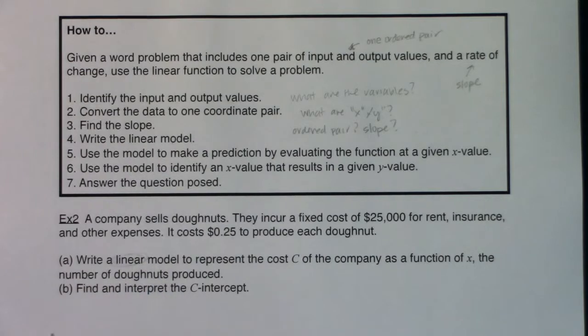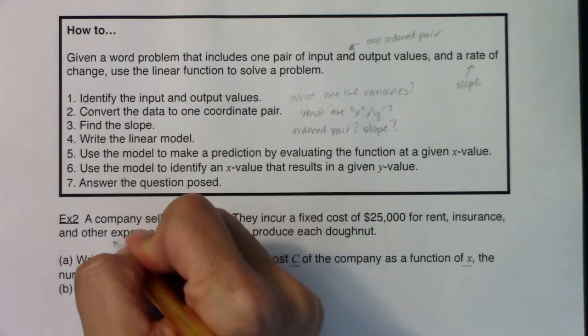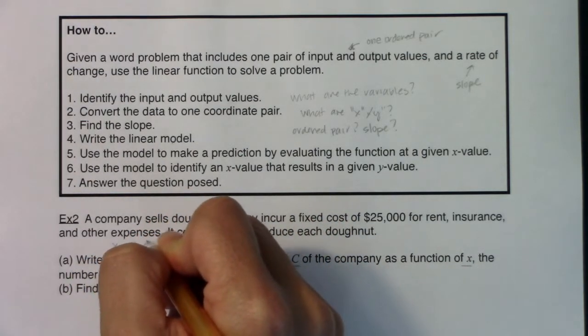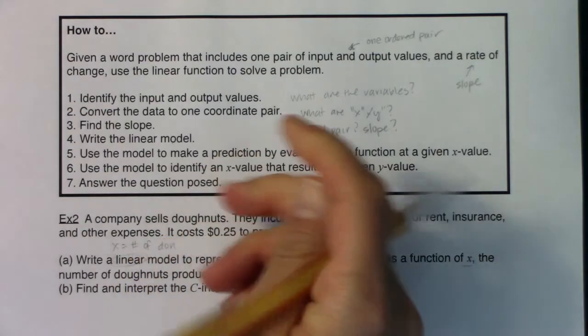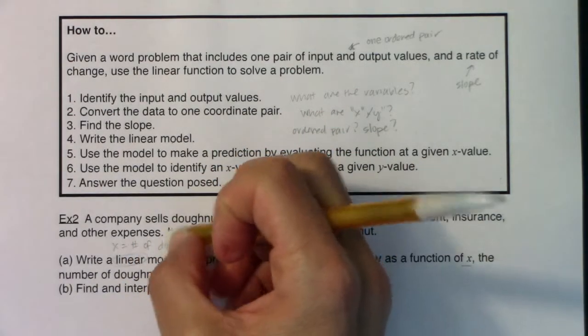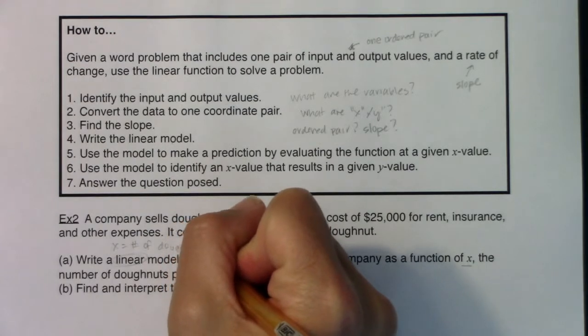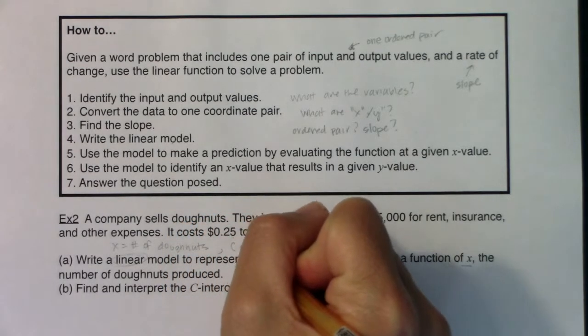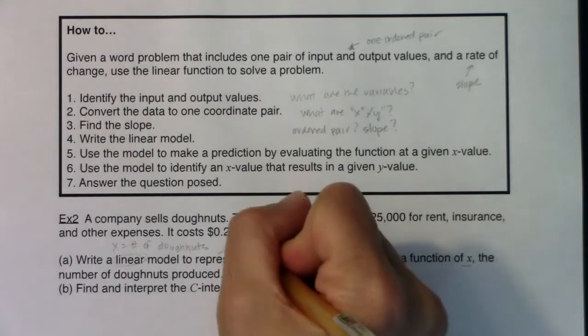Write a linear model. I want a linear model to represent the cost C of the company as a function of x, the number of doughnuts produced. Find and interpret the C-intercept. So I'm not going to use x and y. They're telling me right here I'm using C and x. So cost is one of my variables, and then it looks like the number of doughnuts is the other. So my x variable is the number of doughnuts, and then my dependent variable C is the cost to the company.